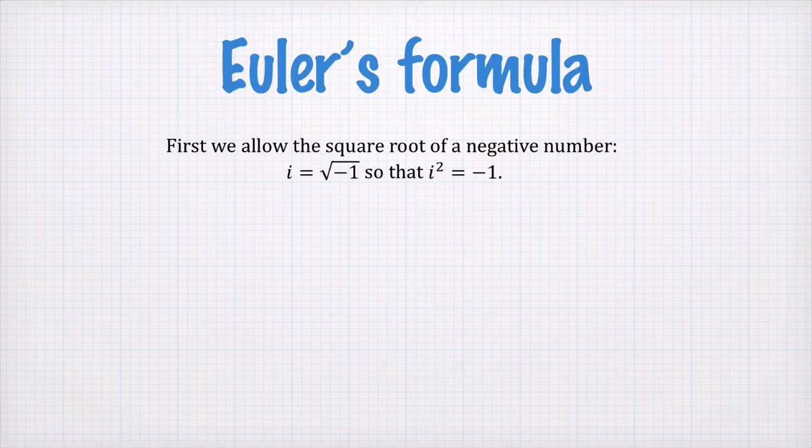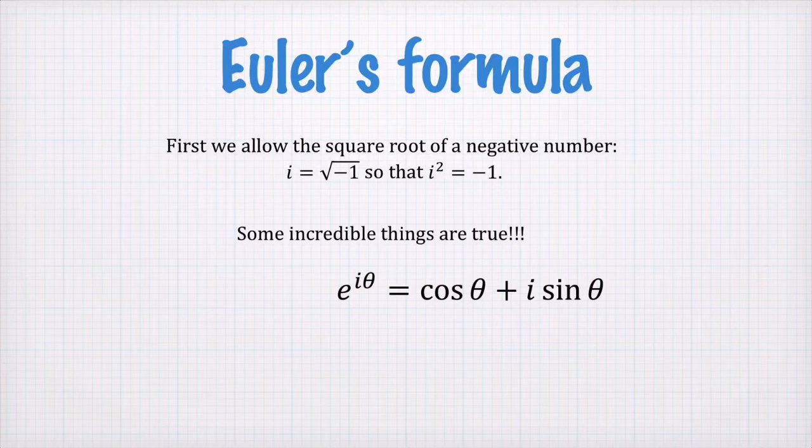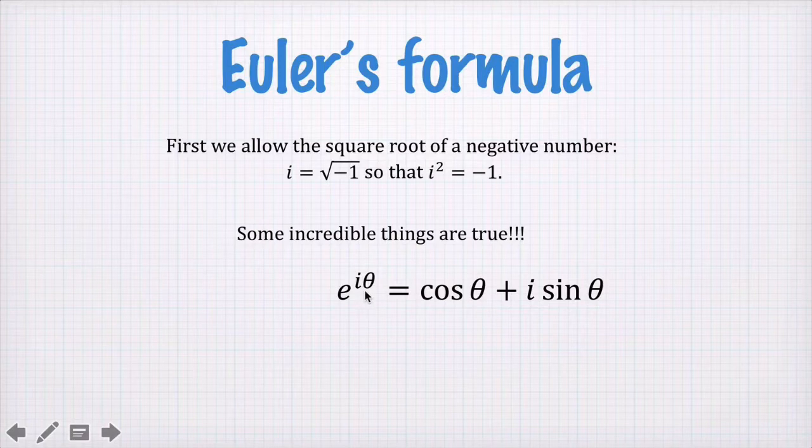So to begin with, if we have this i being the square root of minus one, some incredible things are true. First incredible thing, e to the i theta, so theta is some variable, e to the i theta is equal to cosine theta plus i sine theta.